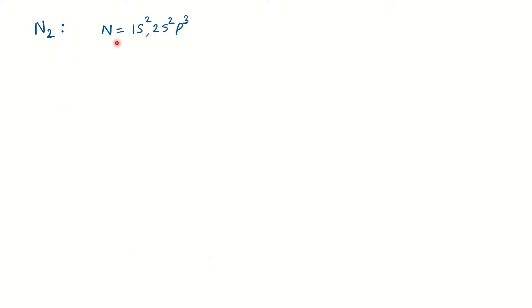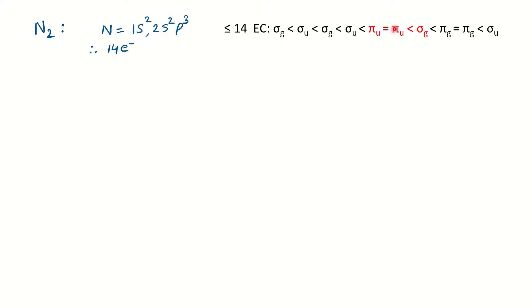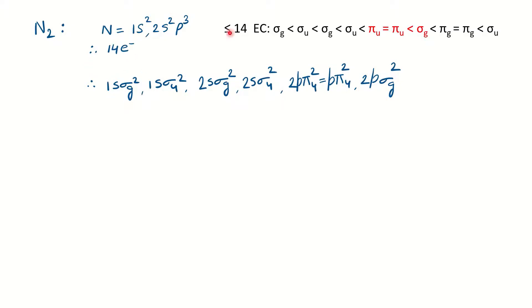The next example is nitrogen N₂. Two nitrogen atoms, each with configuration 1s²2s²2p³, give a total of 14 electrons. From the first video, for 14 electrons or fewer the filling order is: σg, σu, σg, σu, then πu, πu. For bonding sigma orbitals we have g symmetry; for pi bonding orbitals we have u symmetry — just the reverse. For greater than 14 electrons, the pi orbital position changes. Filling 14 electrons into this order, each sigma orbital takes 2 electrons, then the last two go one-by-one into the two πu orbitals, and the final two electrons occupy σg².